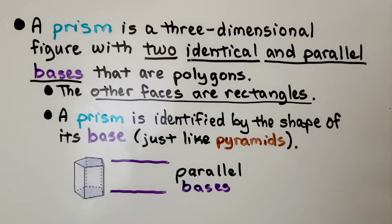A prism is identified by the shape of its base, just like pyramids. We can see this is a pentagon base, and this is a pentagon base, and they're parallel to each other. We can see the rectangular faces.